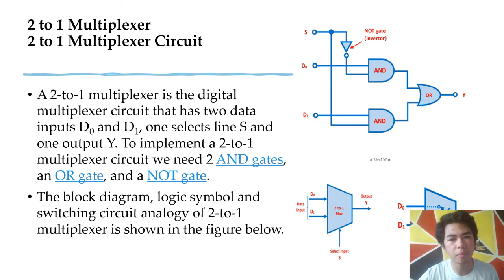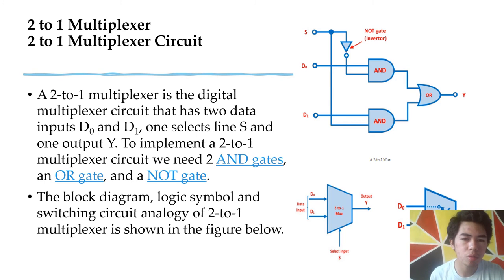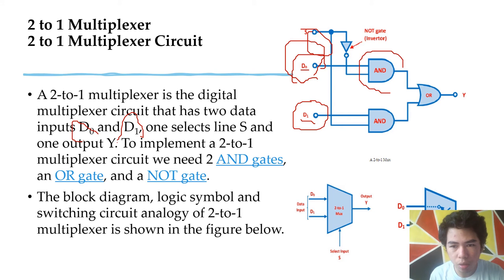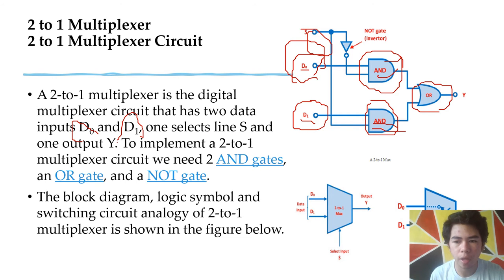A 2-to-1 multiplexer is a digital multiplexer circuit with two data inputs — D0 and D1 — one select line S, and one output Y. To implement a 2-to-1 multiplexer circuit, we need two AND gates, one OR gate, and one NOT gate. The circuit diagram is shown in the right corner, and the block diagram logic symbol and switching circuit analogy are also shown.